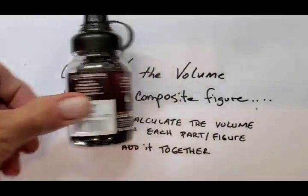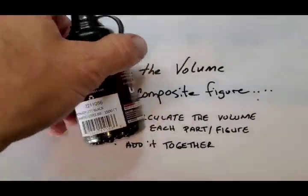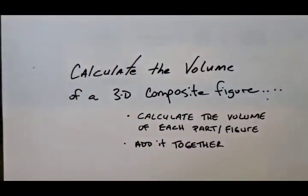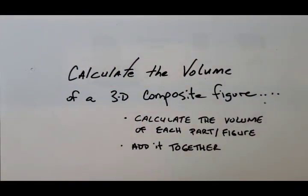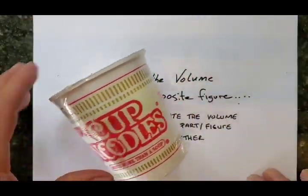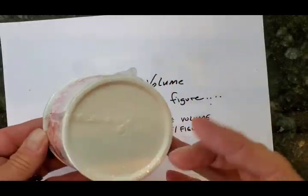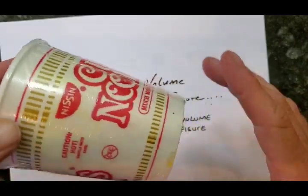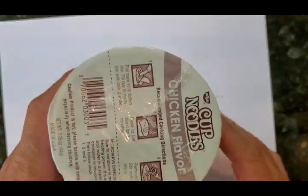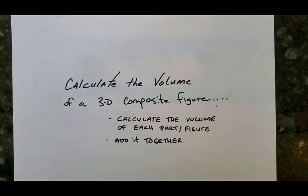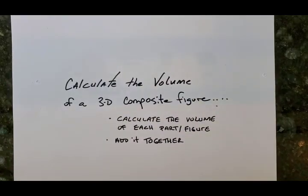Another cylinder here. This container is basically a cylinder. You could easily find out how many of these little BBs fit inside. Also, you might be familiar with this — some of the yummiest, saltiest soup in the world comes in a three-dimensional container, and you could say it's almost a cone, a partial cone. So just some examples of three-dimensional figures.